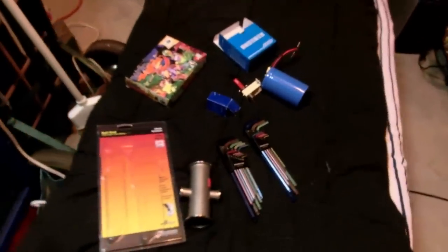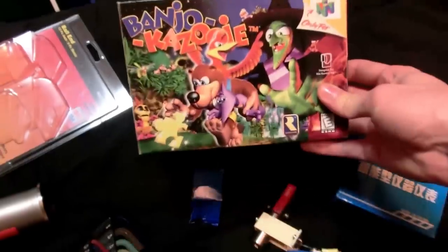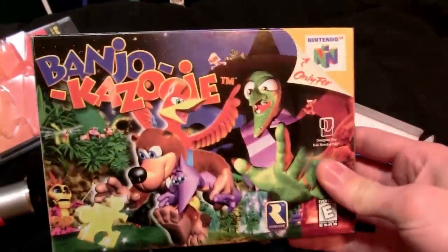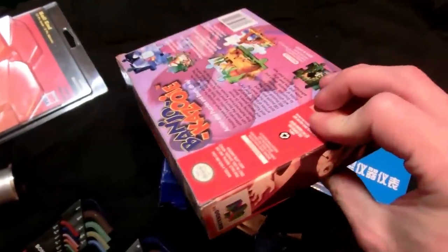Got some new stuff. A lot of new stuff. So first off, got this from eBay. Banjo-Kazooie. I've been wanting to play this game for years. Finally got it. It's for the Nintendo 64.